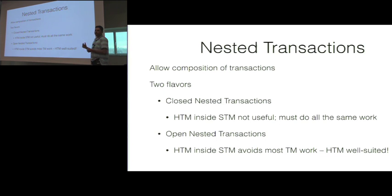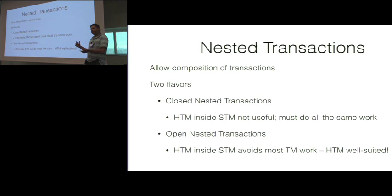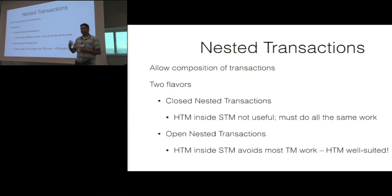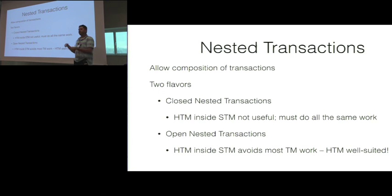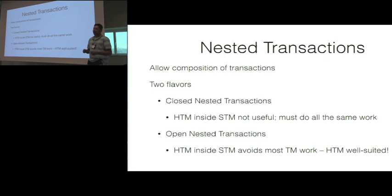The main difference between these two is what happens at the point of commit. When a Closed Nested Transaction commits, the child's reads and writes get appended to the parent's log, and the writes become visible to other transactions only when the parent commits. In Open Nesting, when a child transaction commits, the writes are made visible immediately at the cost of acquiring an abstract log and logging undo operations.